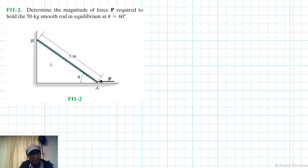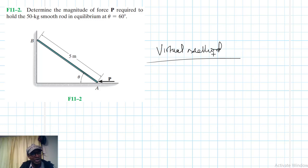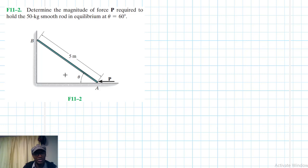We are going to solve this problem using a method called the virtual work method. This is an alternative method to the equilibrium of a particle, the equilibrium of a rigid body, and the equilibrium of interconnected rigid bodies. We could solve this using the standard equations of equilibrium for static bodies, but for this chapter we are using the virtual work method.